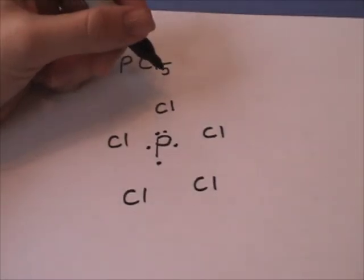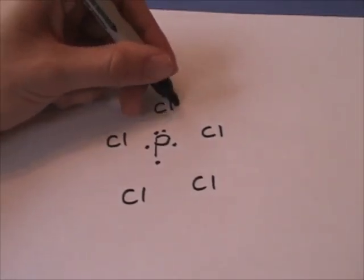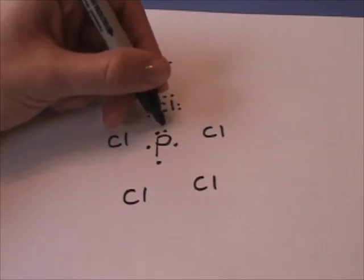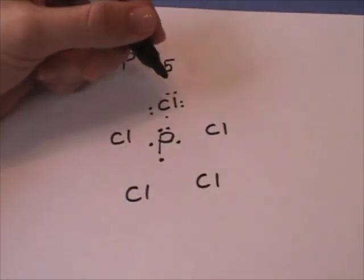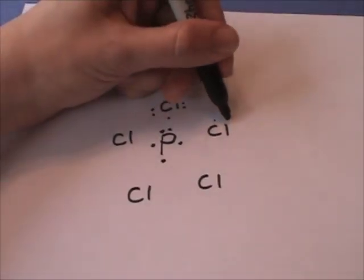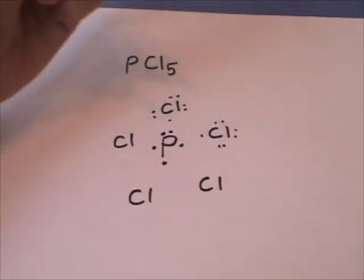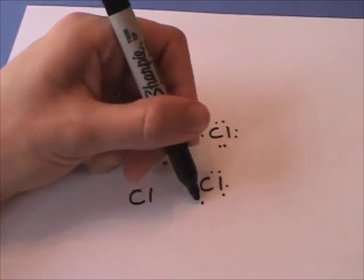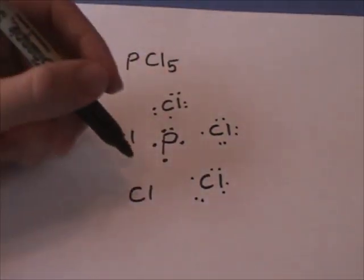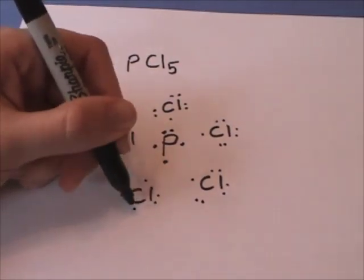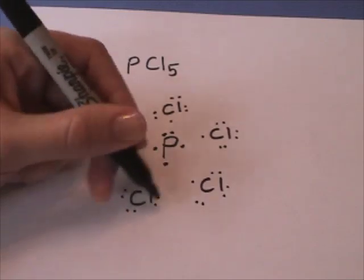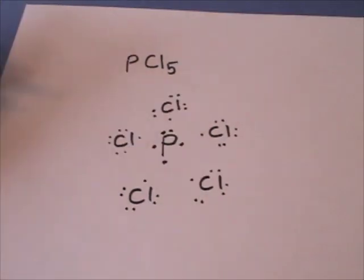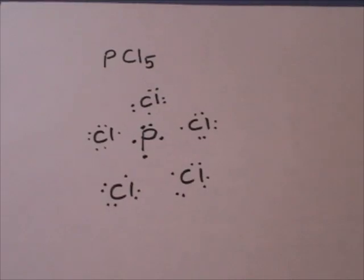And chlorine is in group 7A, so there's seven valence electrons: one, two, three, four, five, six, and I'm going to put this one over here because I can already see that it's probably going to want to bond with one of those phosphorus electrons. Each one of those chlorines has seven valence electrons around it.